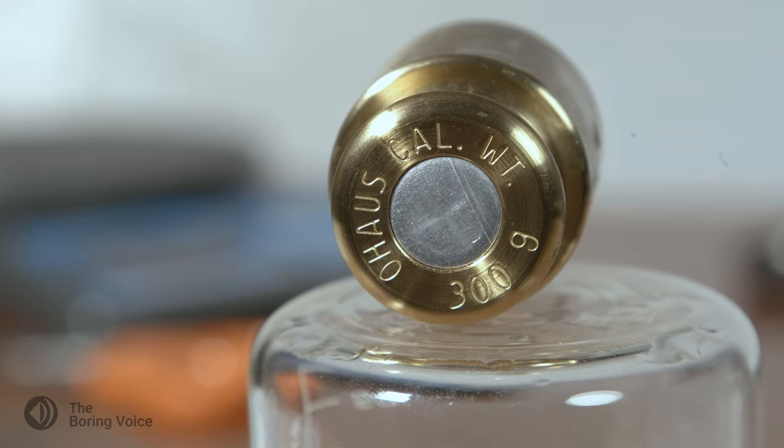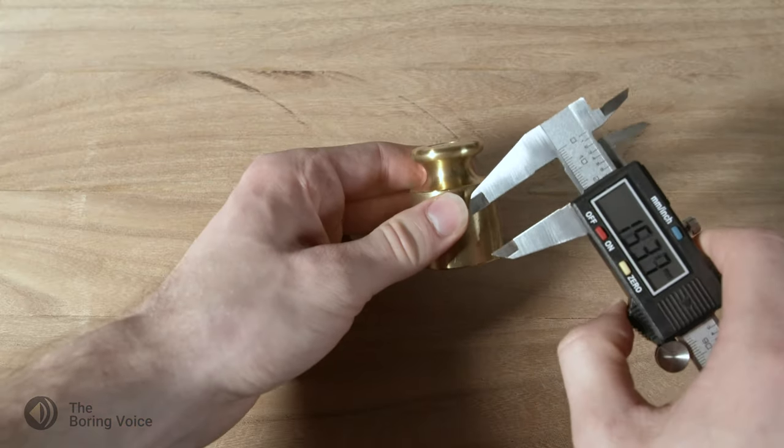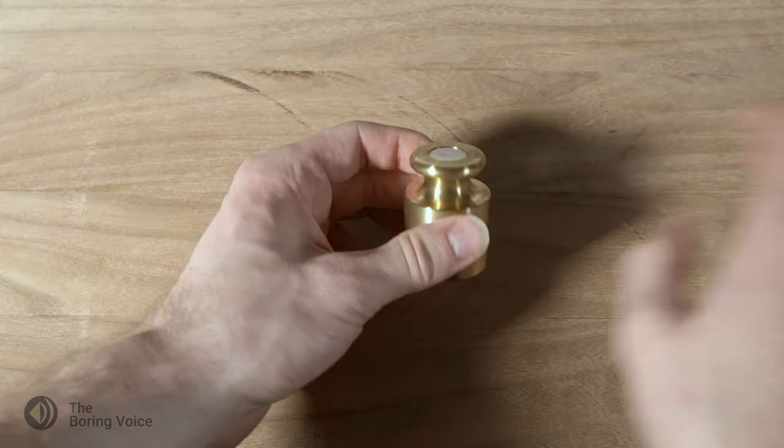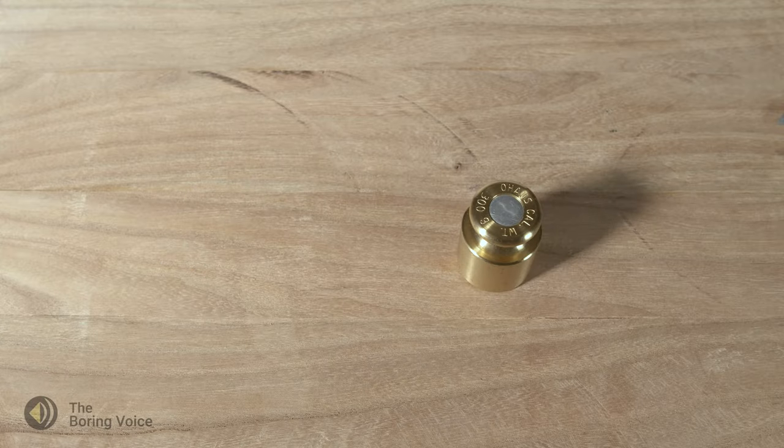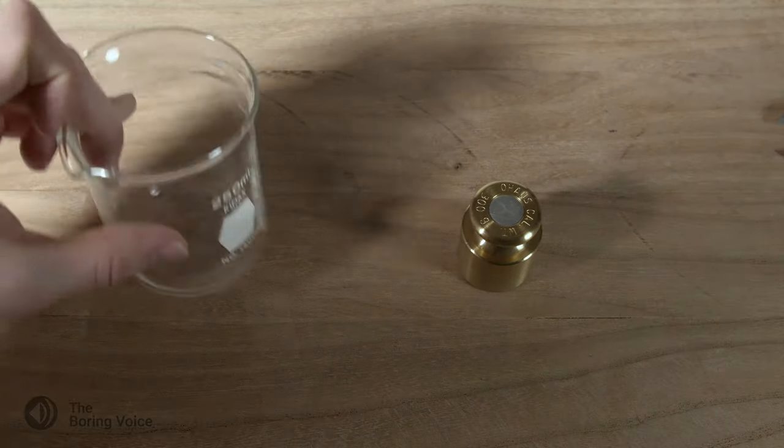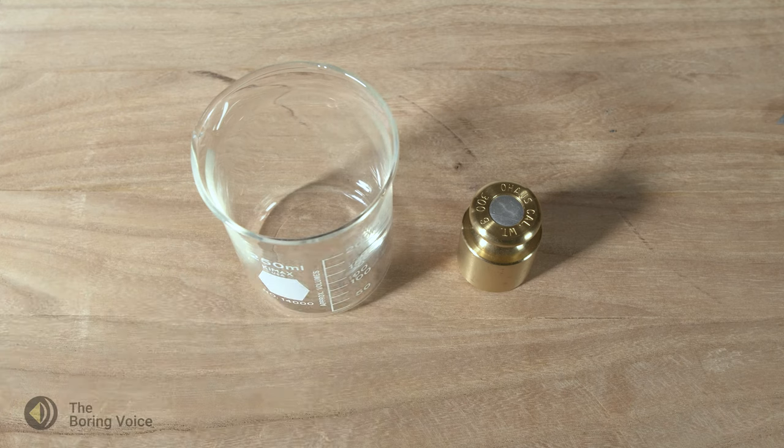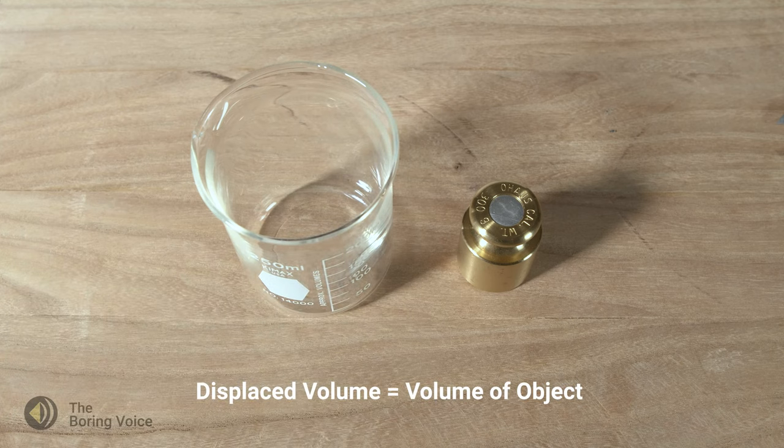This is a simple calibration weight. I won't be able to use my calipers to measure its volume due to these curves in the surface, but I can obtain the volume indirectly by submerging it in a beaker of water. The difference between starting volume and ending volume will be the volume of my object.